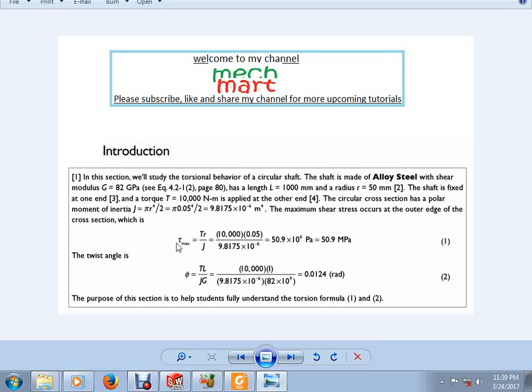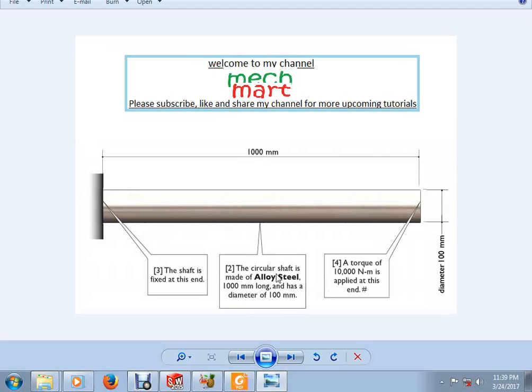The twist angle can be calculated from the basic formula phi equals T times L over G times J. Putting the values of the torque, length, polar moment of inertia and shear modulus, the twist angle is 0.01249 radian. So, this is the simple problem that we have made in SolidWorks.